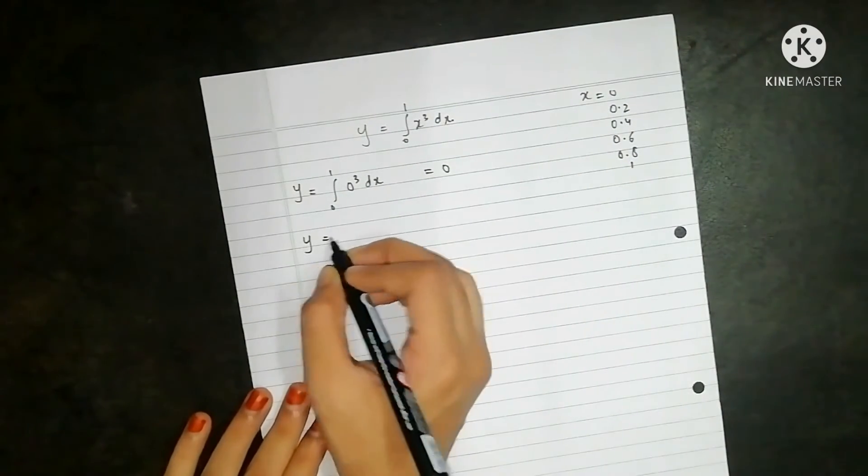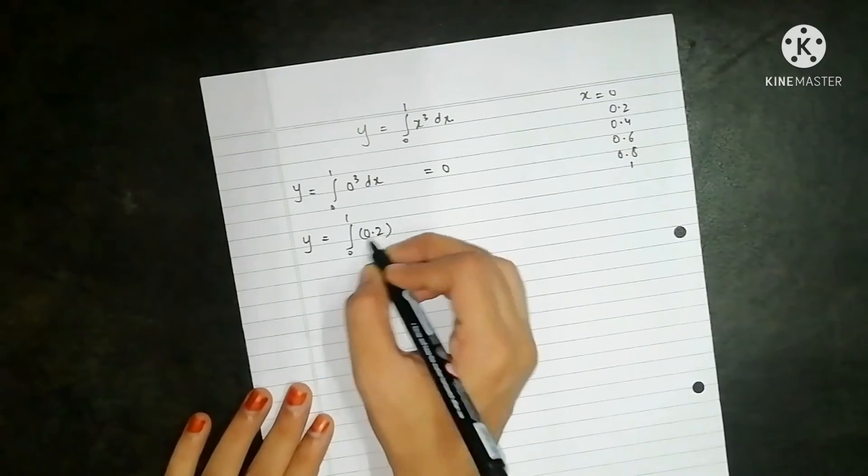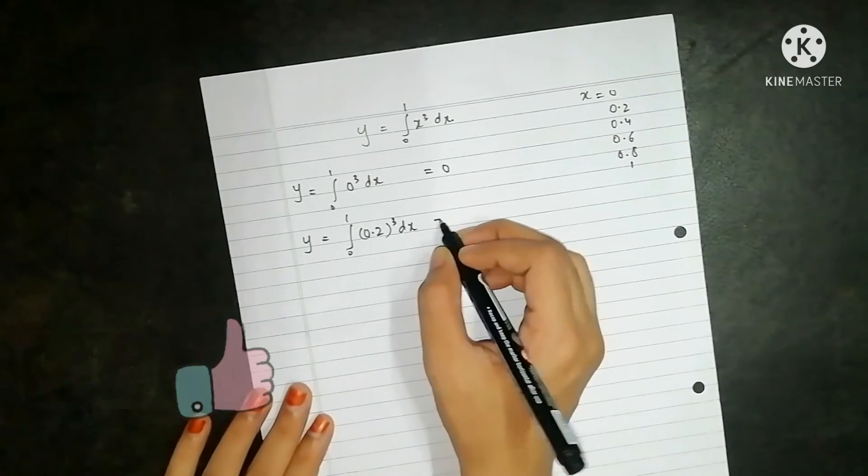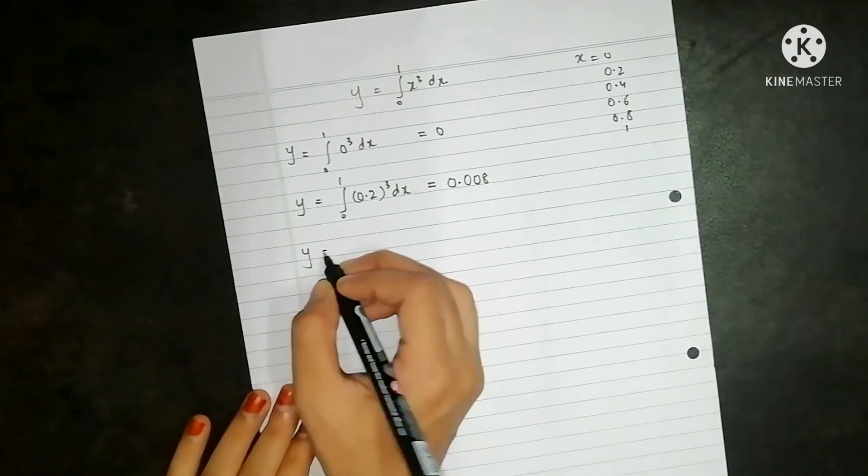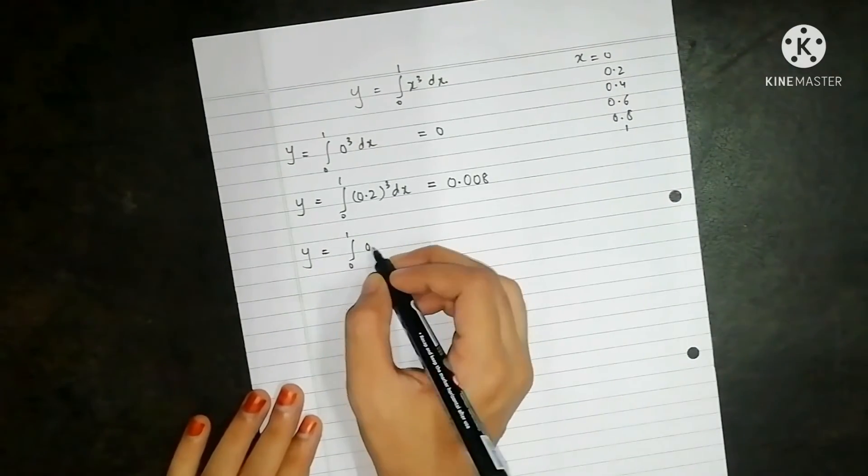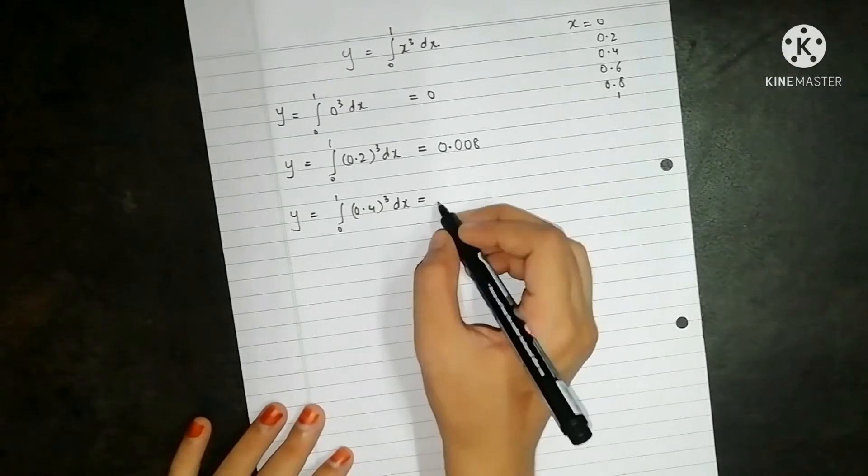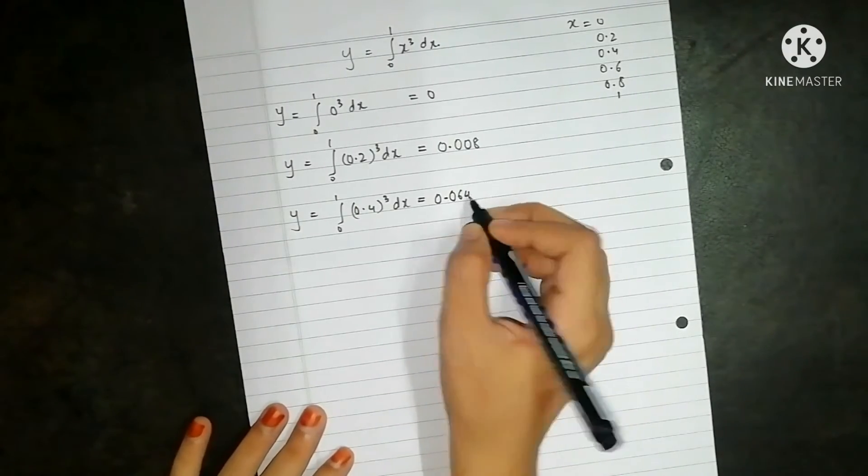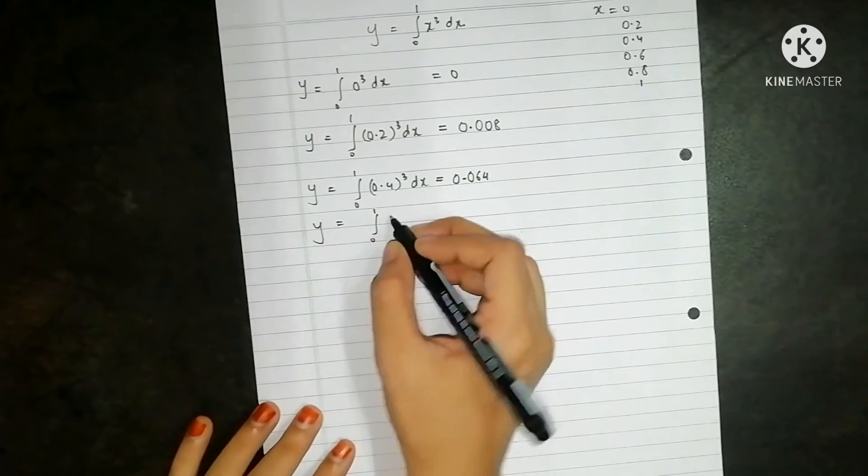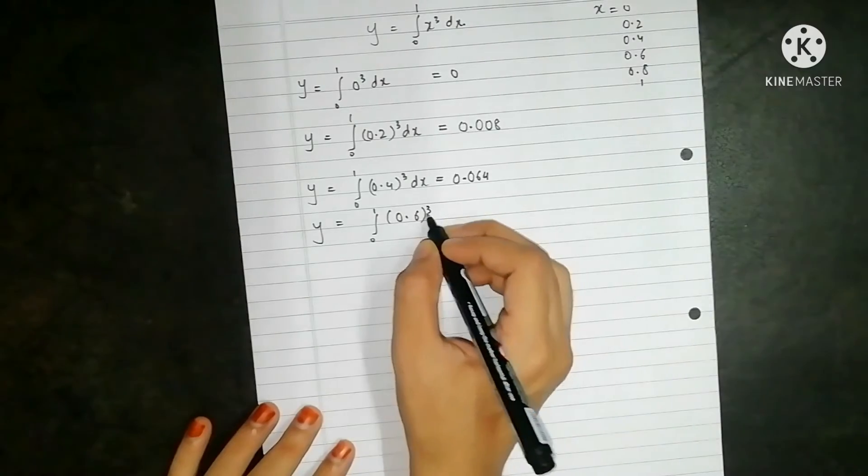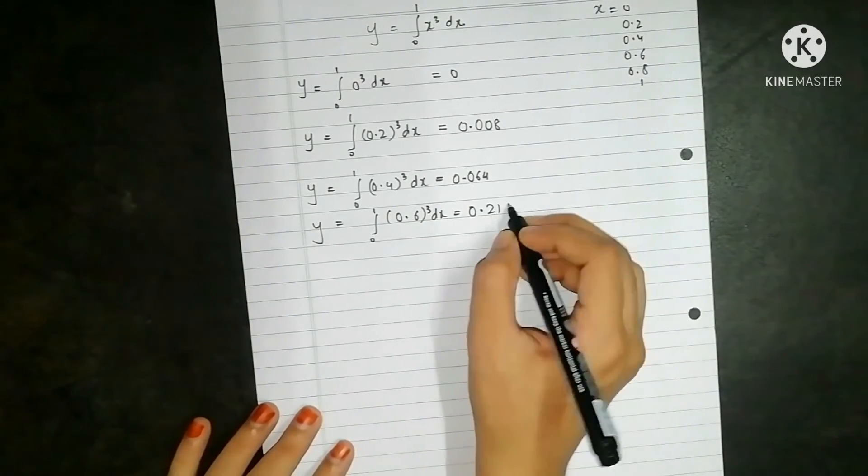Then y is equal to 0 to 1 of 0.2 cubed dx, the value will be 0.008. Then y is equal to 0 to 1 of 0.4 cubed dx, so we will get 0.064. Then y is equal to 0 to 1 of 0.6 cubed dx, that is equal to 0.216.